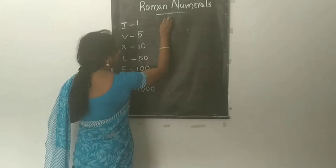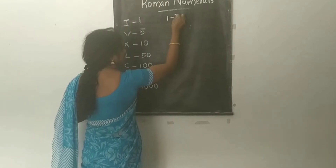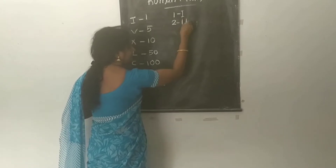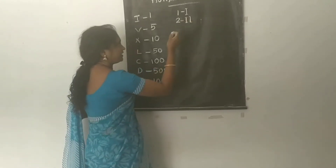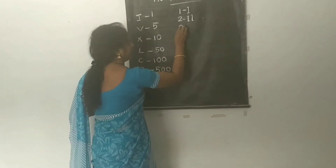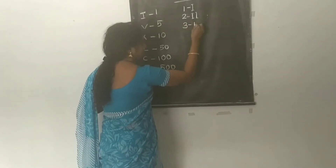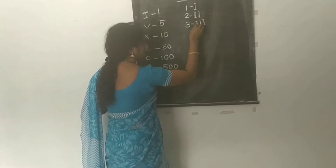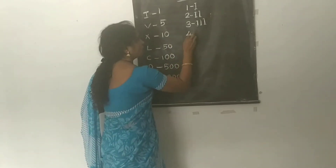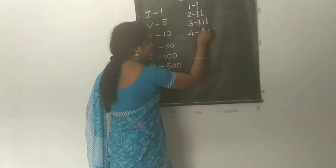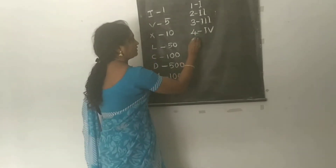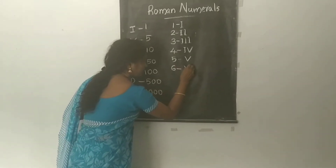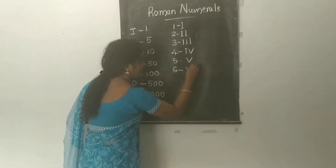1 can be written as I. 2 can be written as II — two I's, which equals 2. 3 is III. 4 can be written as IV. 5 can be written as V, and 6 is VI.